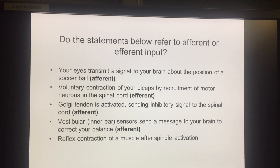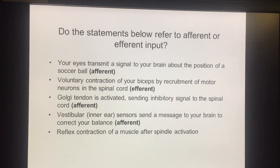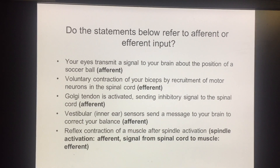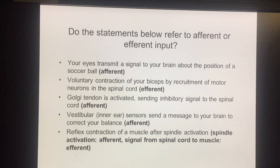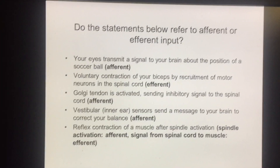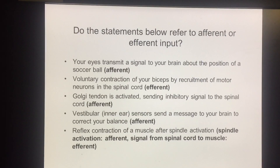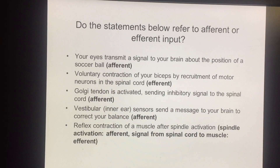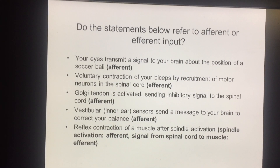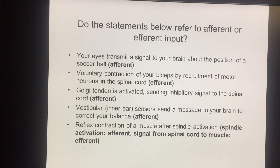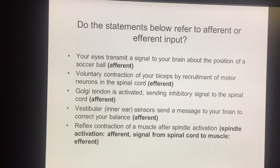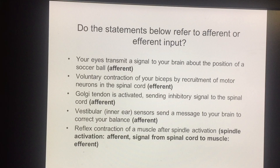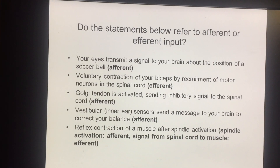The last example — reflex contraction of a muscle after spindle activation — is both afferent and efferent. The afferent part is the activation of the muscle spindle sending excitation to the spinal cord, causing activation of the motor unit. The efferent part is the signal from the spinal cord causing contraction of the muscle.